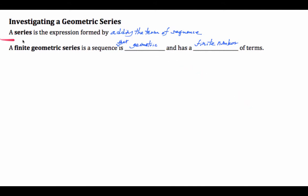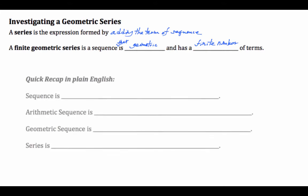So the series is a sum by adding the terms of the sequence, or sum of the sequence. That sort of begs the question, what is a sequence? Let's sort of review, recap. So quick recap, sequence is a list of numbers, any listing of numbers.